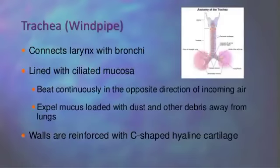The next organ is the trachea, or windpipe, which connects the larynx with the bronchi and is lined with ciliated mucosa. It is a cylindrical tube approximately 11.2 cm in length with a diameter of 2 to 2.5 cm. It lies in front of the esophagus and extends from the larynx, then divides into two bronchi, one for each lung.